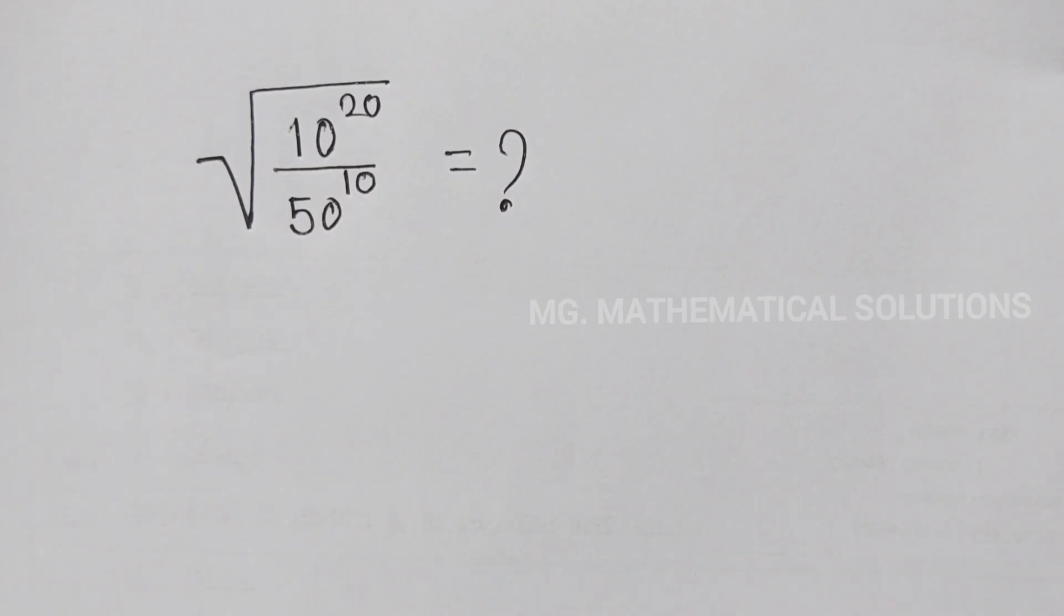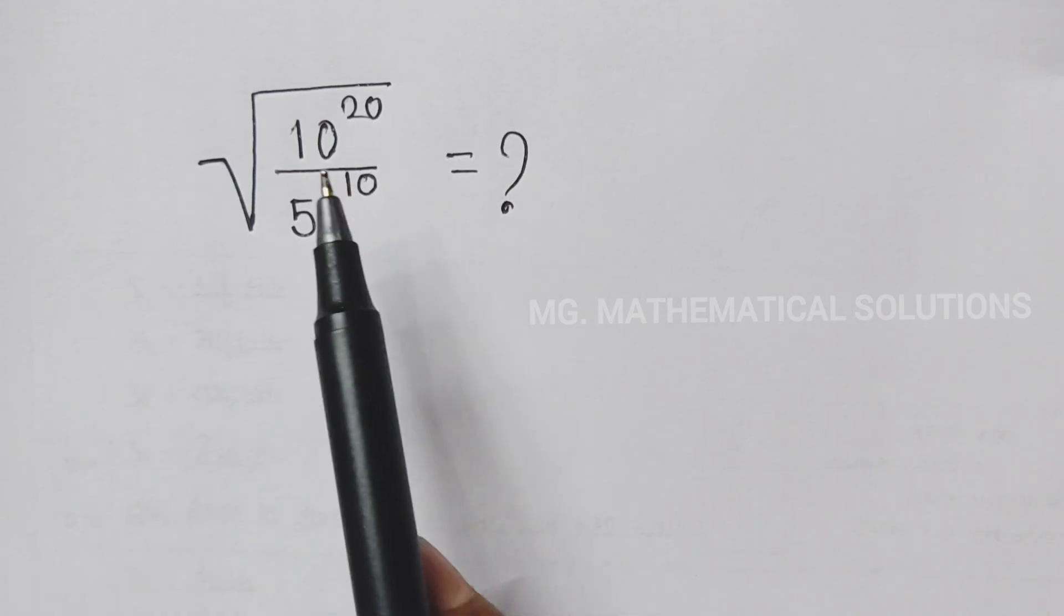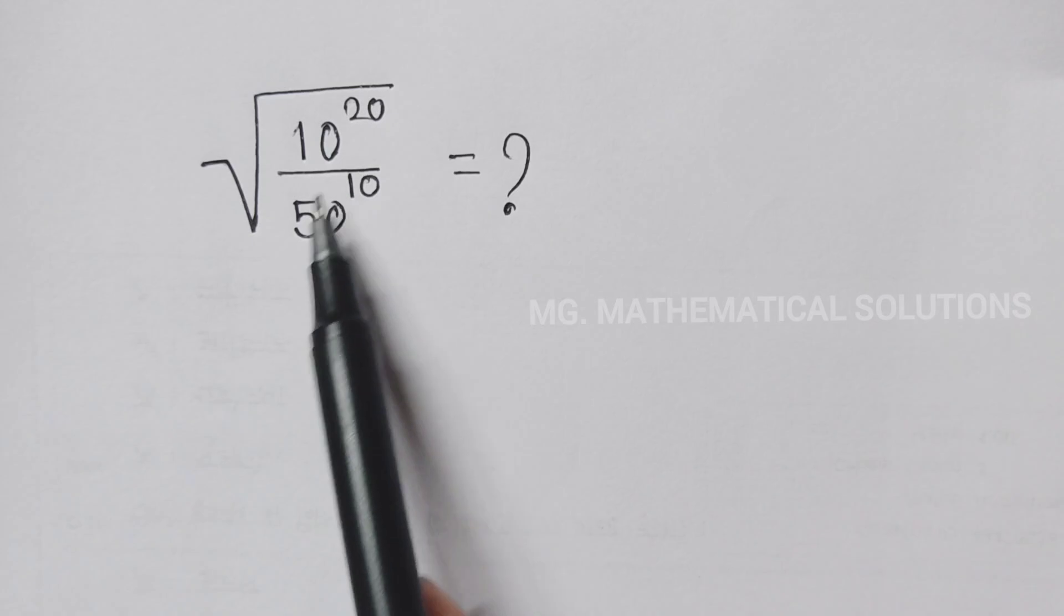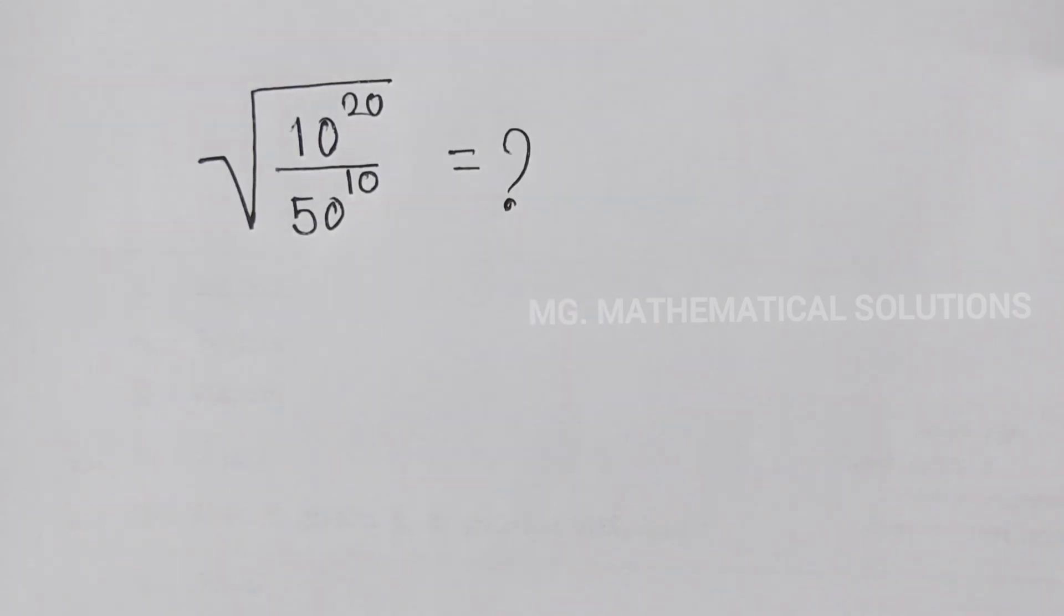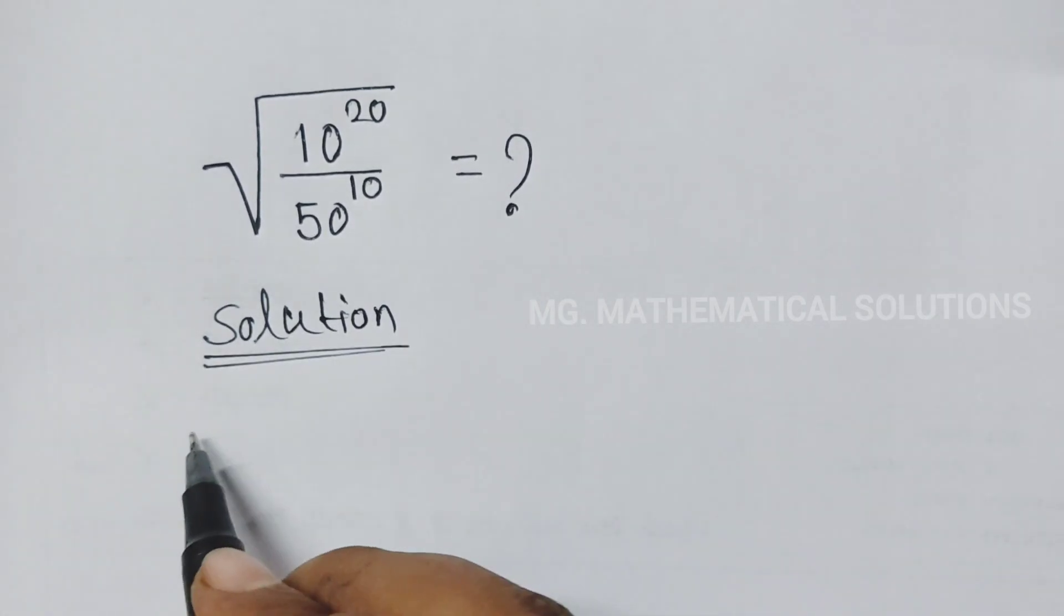Hello students, welcome to our channel MG Mathematical Solutions. Today I solve a square root exponential problem. The question is: square root of 10 to the power 20 over 50 to the power 10 equals what? Let's see the solution.